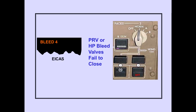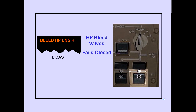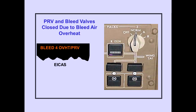The ICAS advisory message 'bleed HP engine' is displayed when the high pressure bleed valve fails closed. The ICAS advisory message 'bleed overheat/PRV' is displayed when a PRV and a high pressure bleed valve are commanded closed due to bleed air overheat. The system fault light also illuminates.